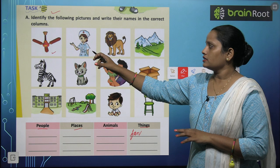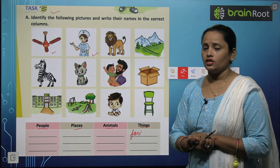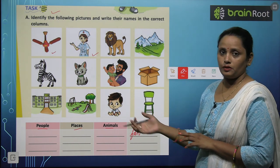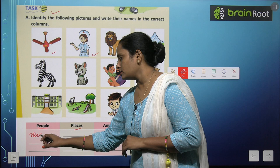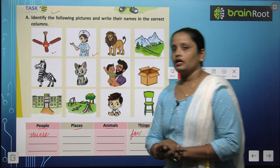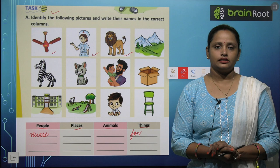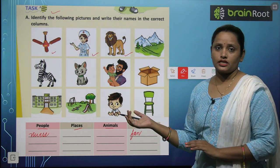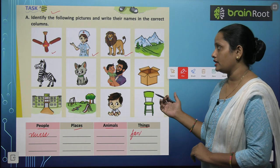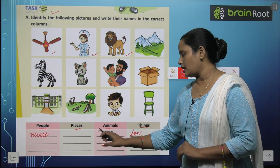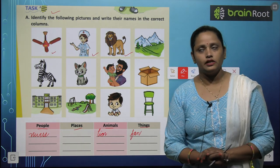Next you can see a nurse. Nurse kaun hai? Koi people hai? Yes. So let's write it here. After that comes lion. Lion kya hai? Koi person hai? Koi place hai? Koi animal hai ya thing hai? It is an animal.